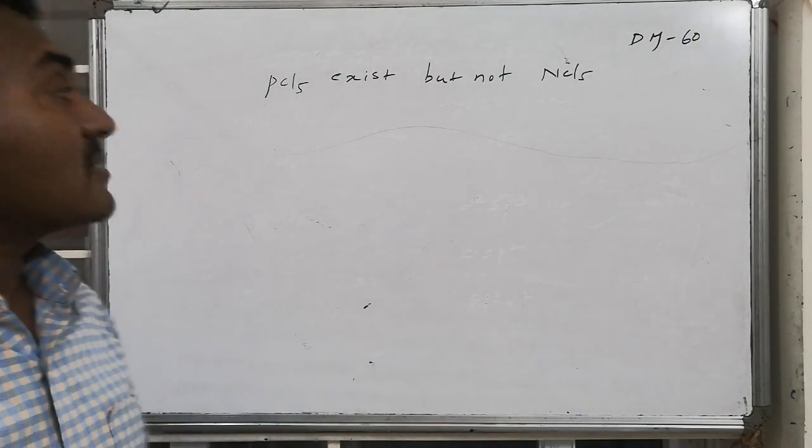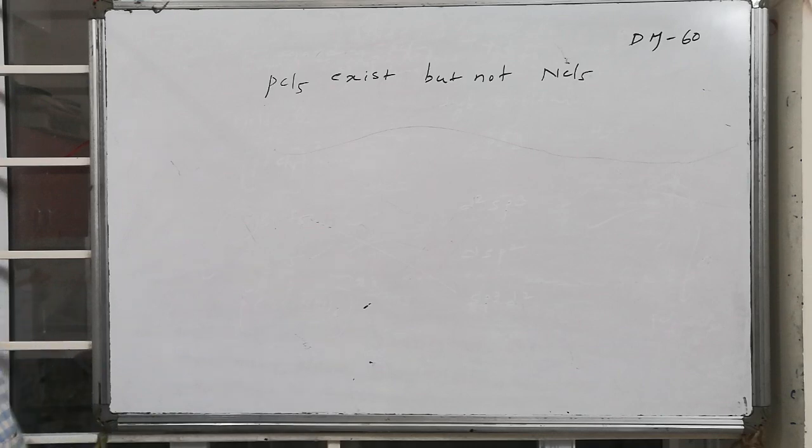This question is very simple. It says PCl5 is existing but not NCl5. Why?